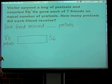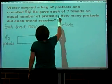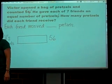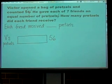Okay? Now let's keep reading. He gave each of seven friends an equal number of pretzels. Stop. Is there information in that sentence that we need to deal with on our model? What? He had seven friends.